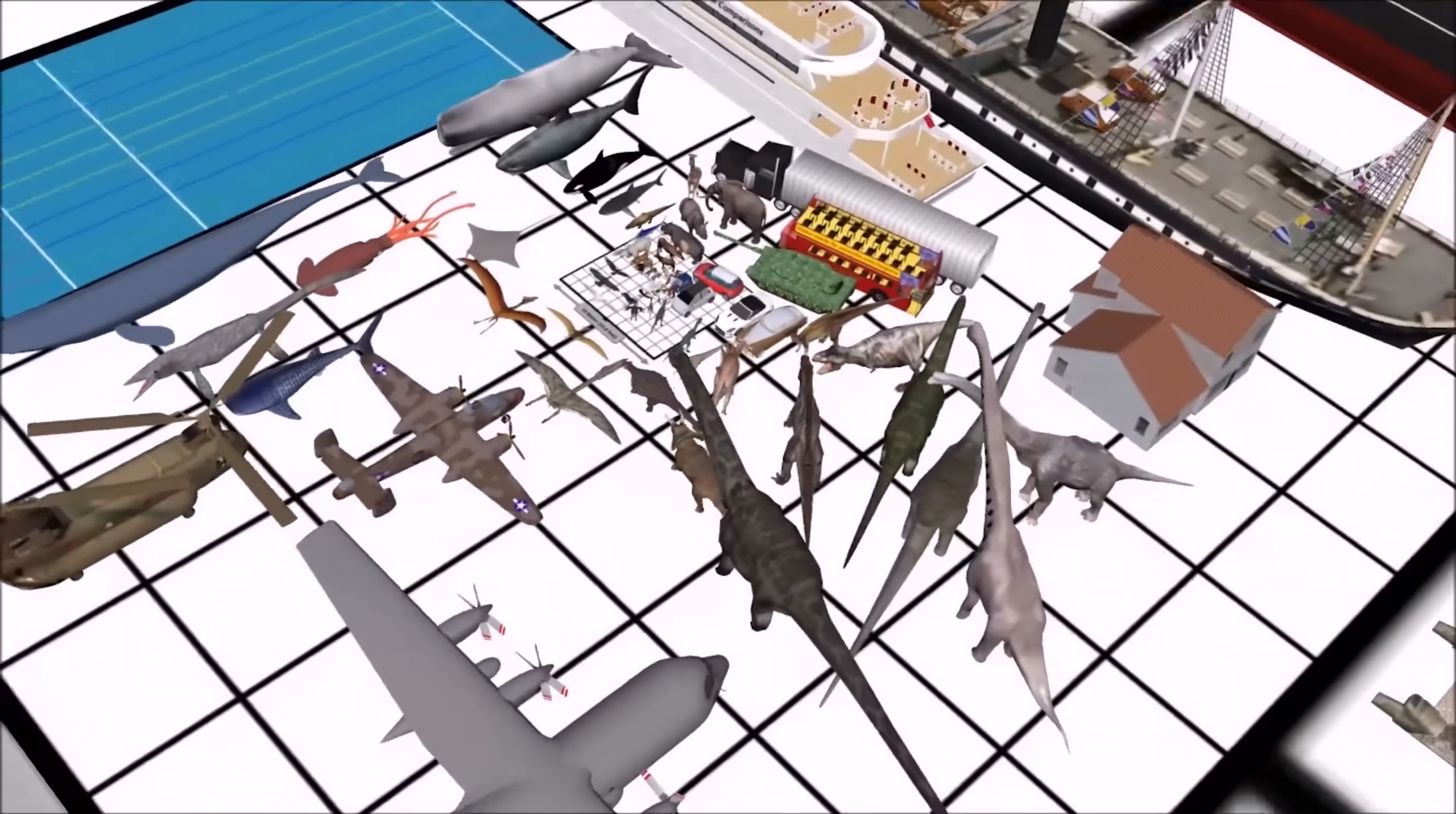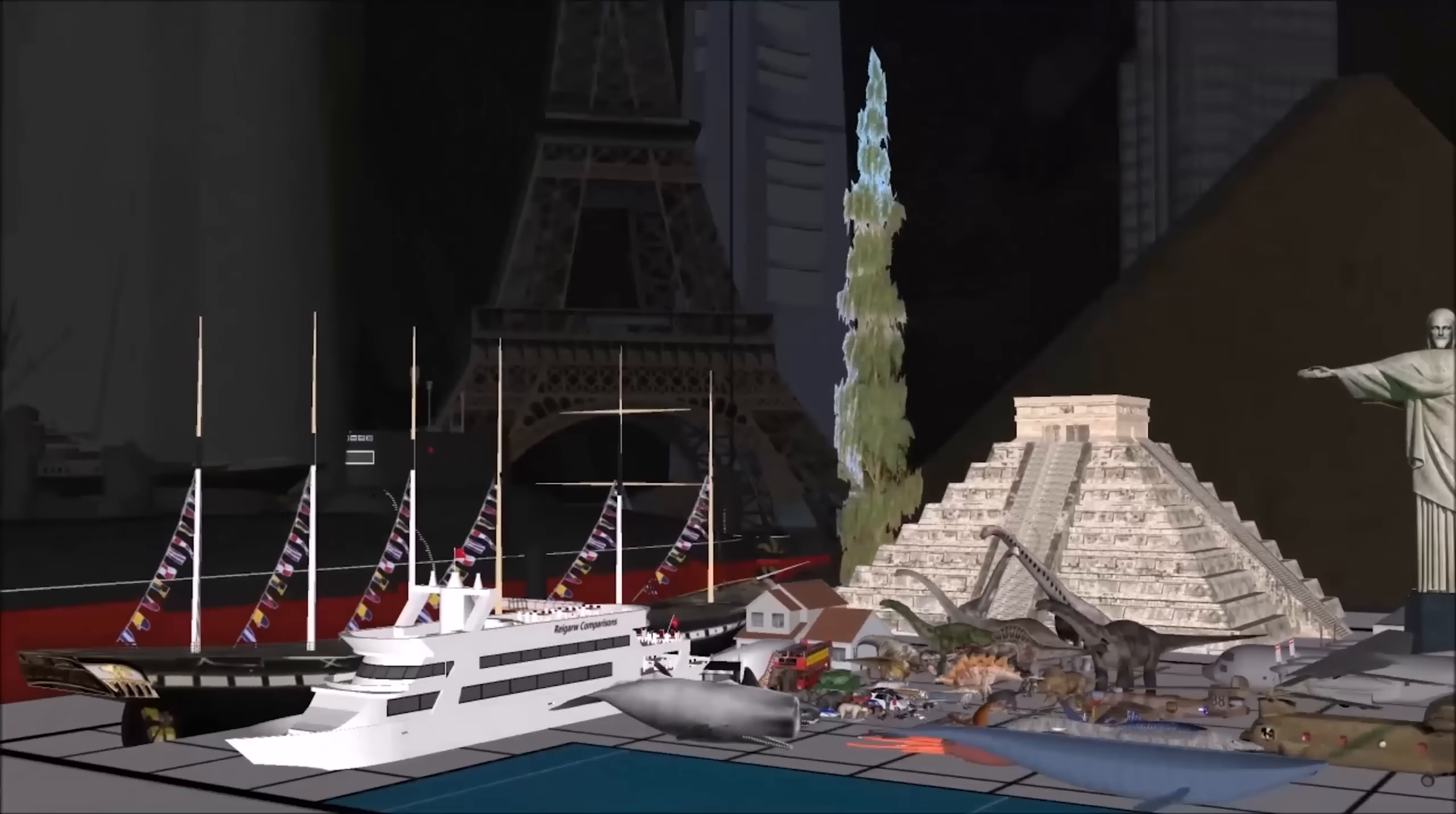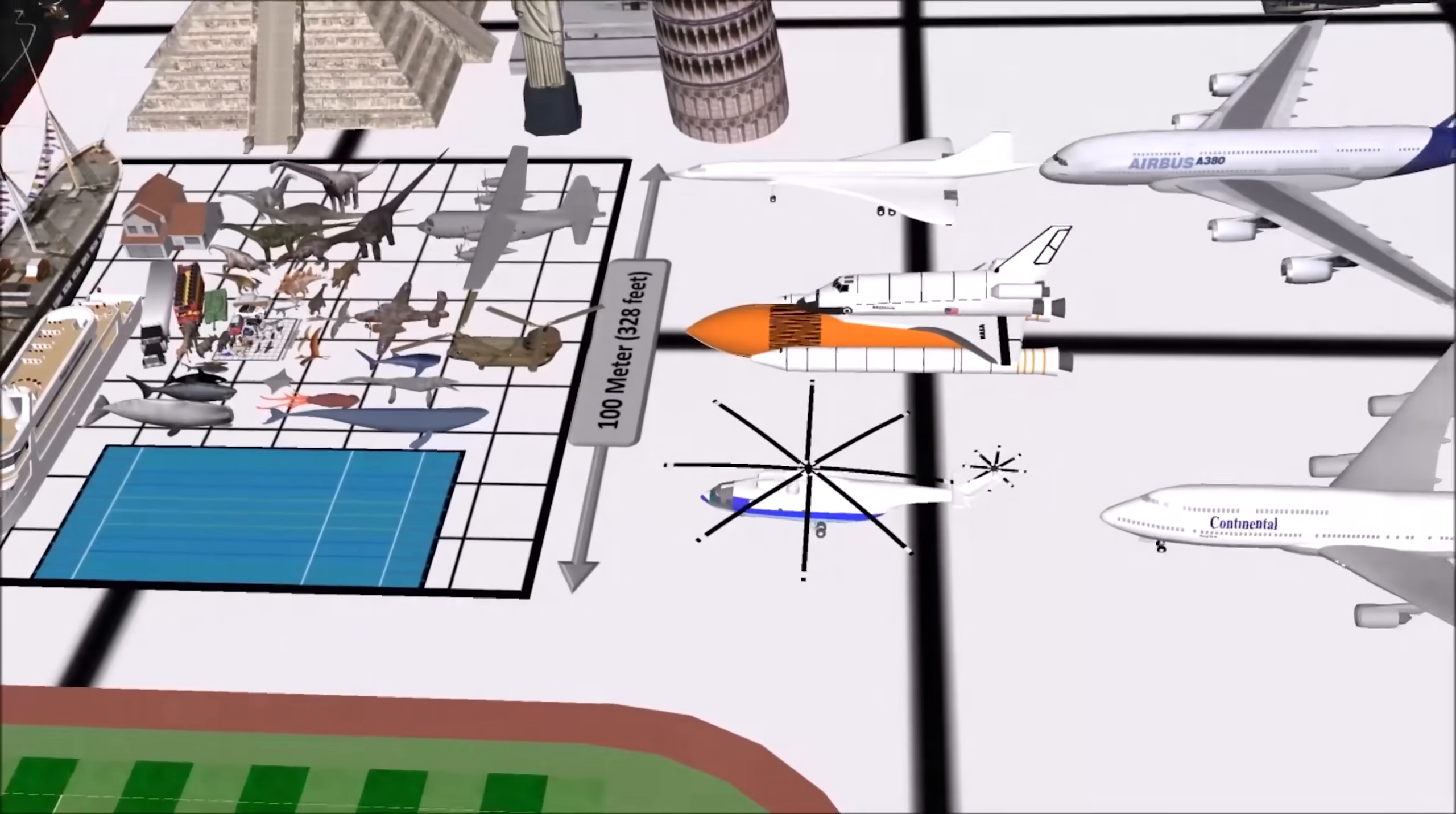But history produced even greater creatures. A jet-sized flying creature, a dinosaur longer than a blue whale, and another taller than a five-story building. Still dwarfed in comparison to the tallest living organism, the Hyperion tree.